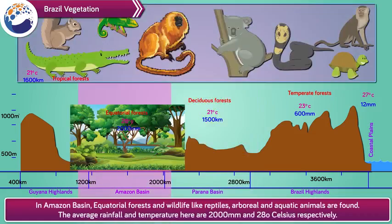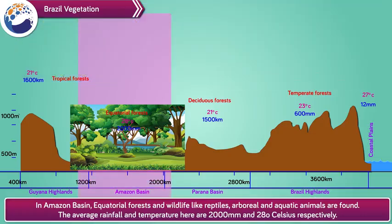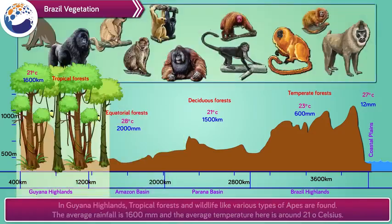In the Amazon Basin, equatorial forests and wildlife like reptiles, arboreal and aquatic animals are found. The average rainfall and temperature here are 2000 mm and 28 degrees Celsius respectively.